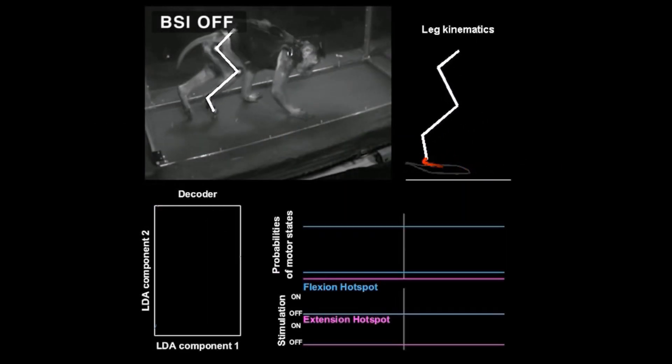The brain-spinal interface mediated similar improvements in the second monkey, which was tested two weeks after the injury.